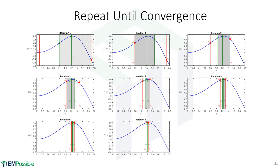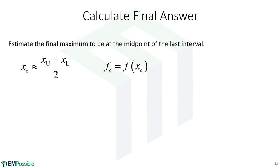This keeps going and going. Usually in about 20 iterations we can close in quite accurately on an extremum, so this is highly efficient. To determine convergence, we look at the distance between the upper and lower bounds — normalizing by averaging — and when that falls below some tolerance we've converged. At the end, I like to average the upper and lower bounds from the final iteration to find the extremum, and optionally evaluate the function there or average fu and fl.